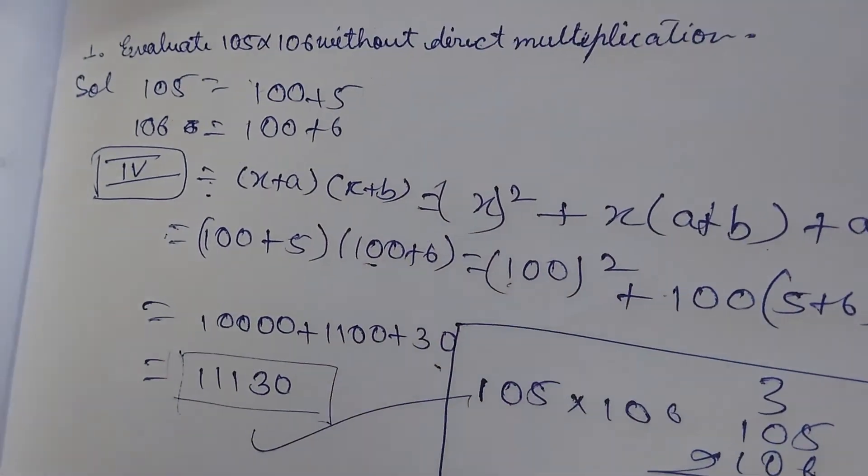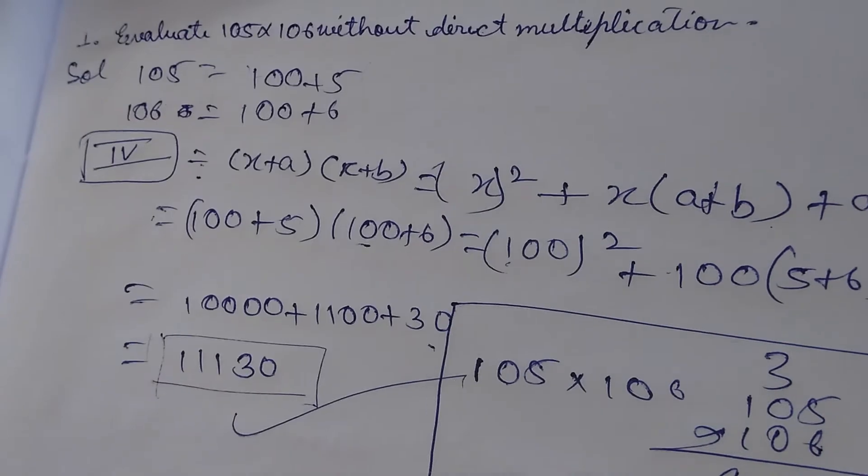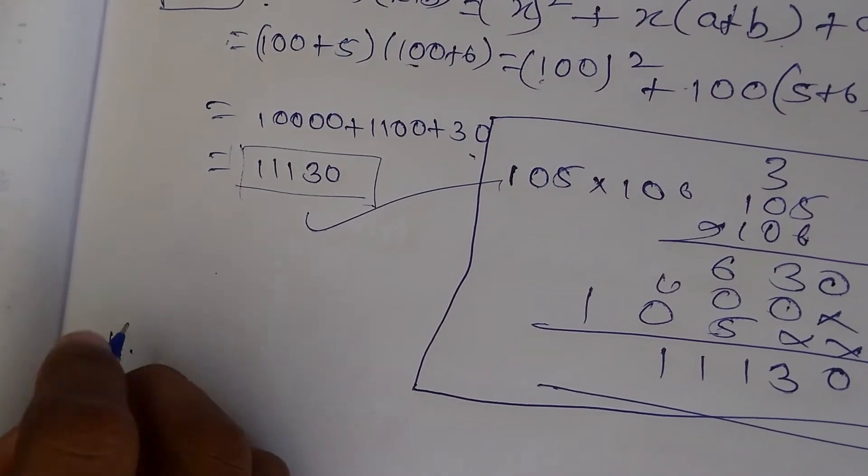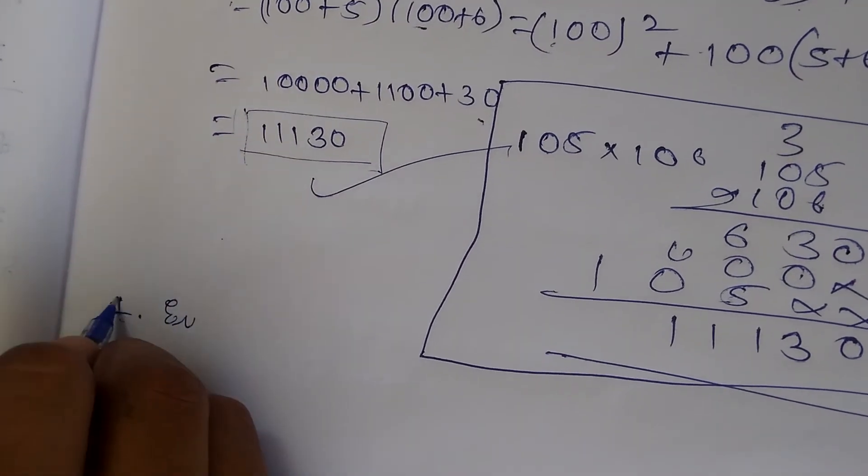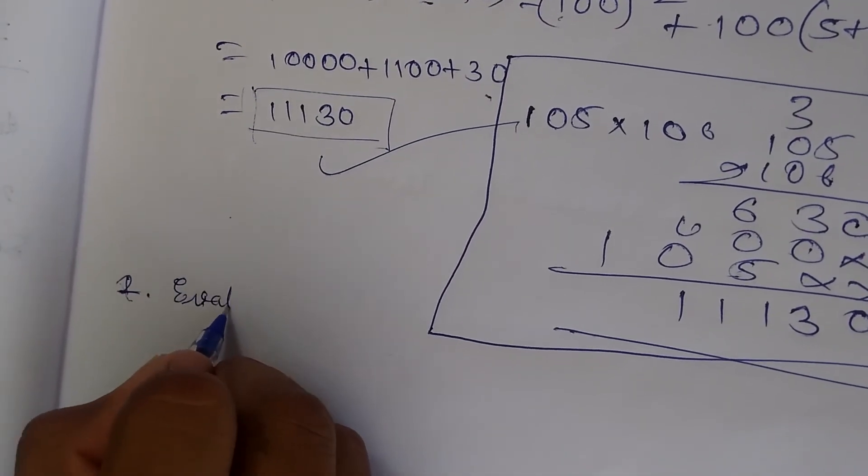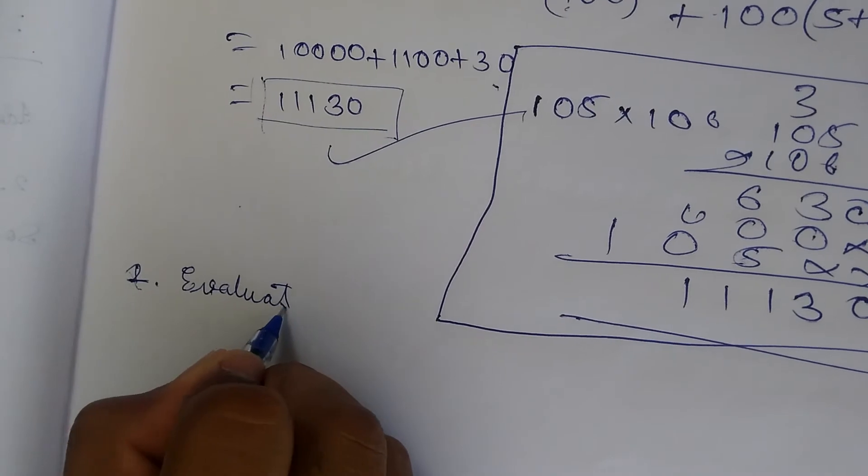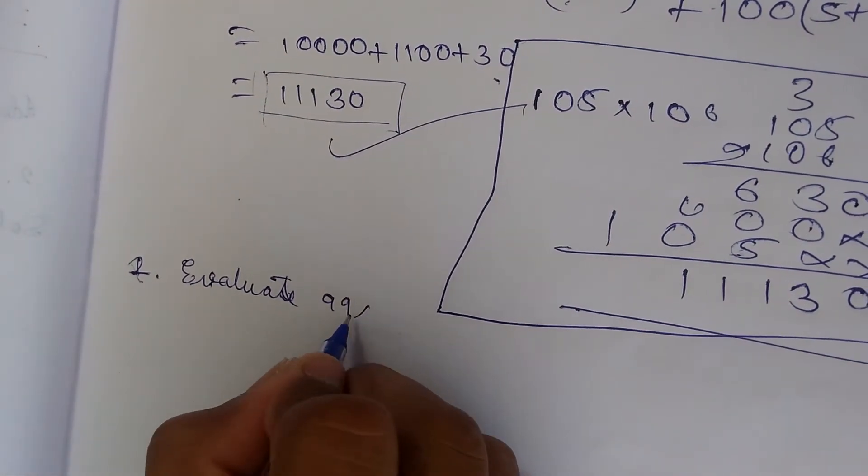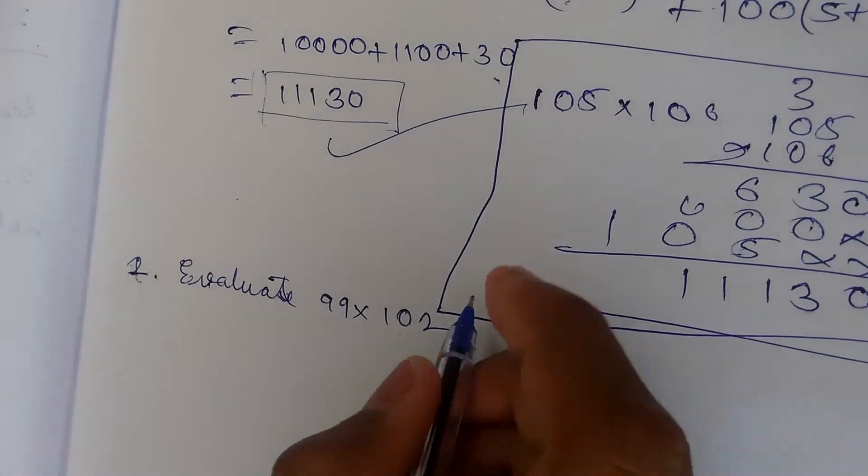Now the second question: evaluate 99 into 102 without direct multiplication.